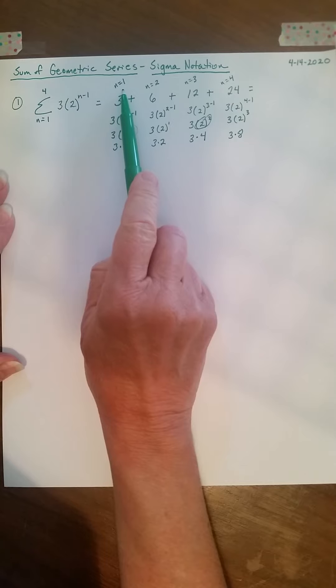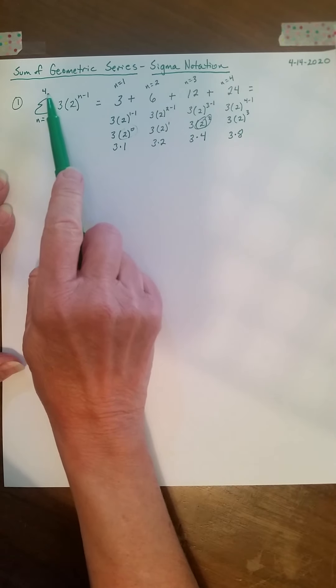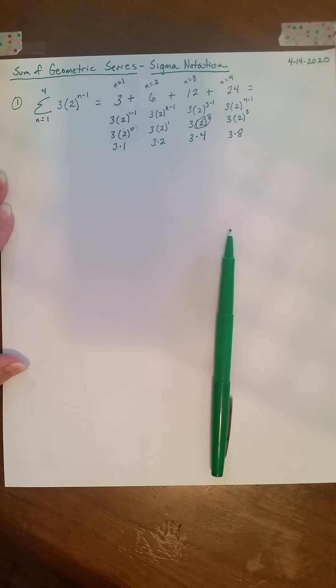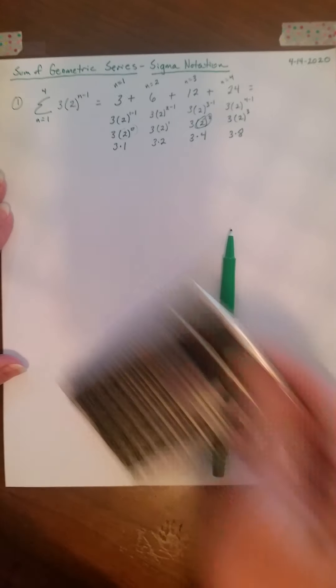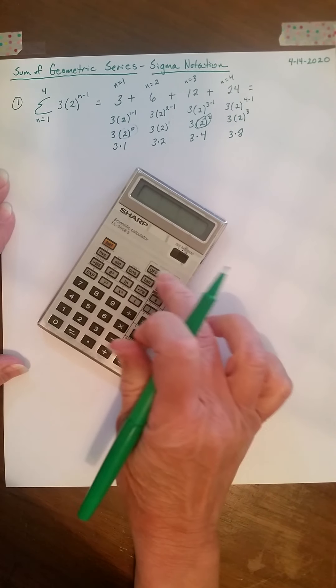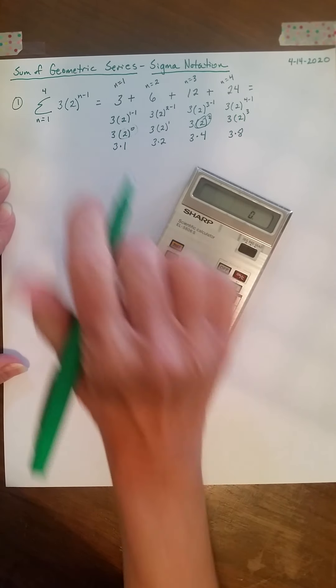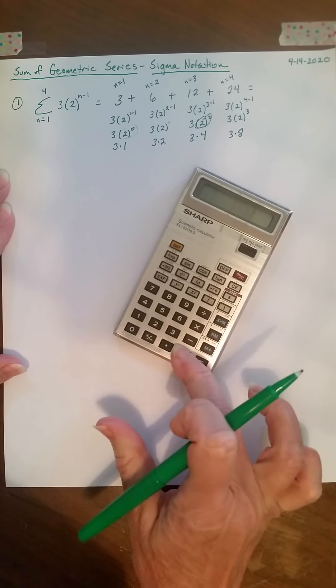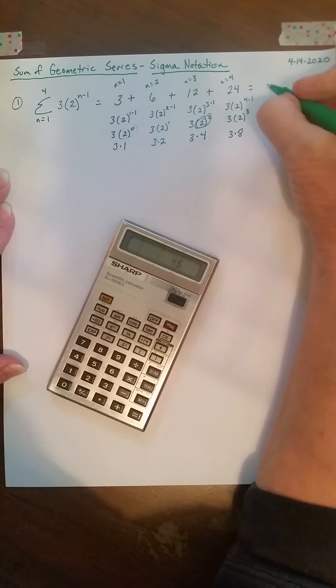I started with my lower limit, n equals 1, and I stopped with my upper limit, n equals 4. So I'm just going to add those together. Now, again, you can do that mentally, or you can use a calculator. I'm going to illustrate using a calculator. I don't want to make any silly arithmetic error here. So 3 plus 6 is 9, plus 12, plus 24.